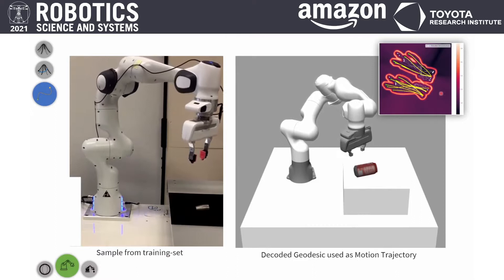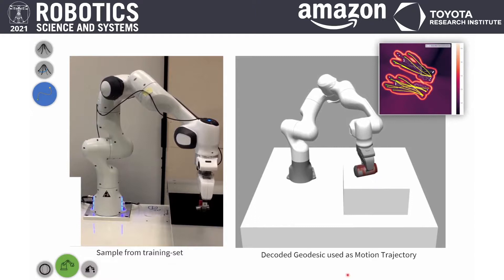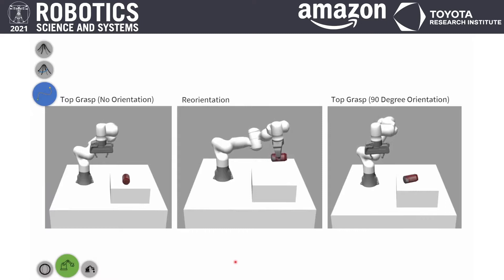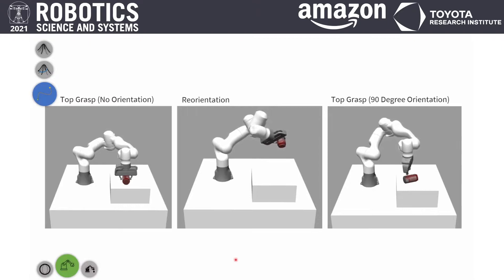Here you can see some examples on the real robot dataset. All these geodesics on the top right side will produce the same motion. On the right side you can see a simulated robot following the decoded geodesic in the ambient space. And here you can see more examples like reorientation and grasping from top, with and without orientation.